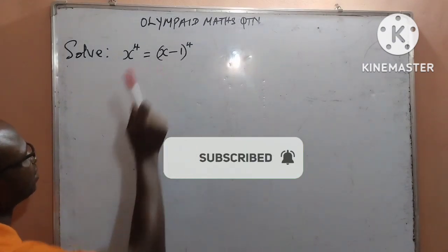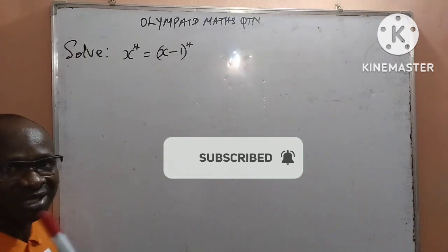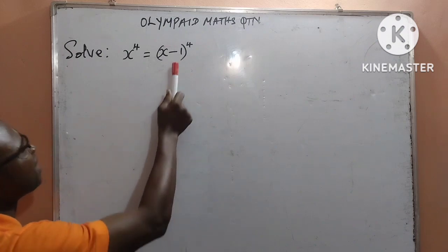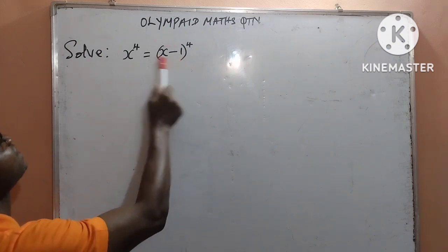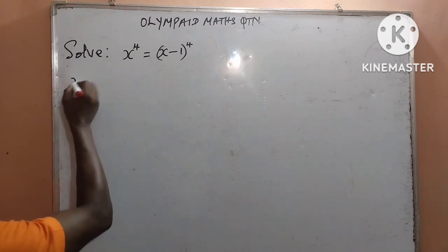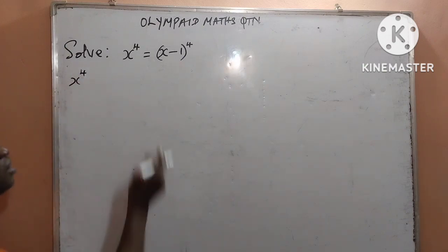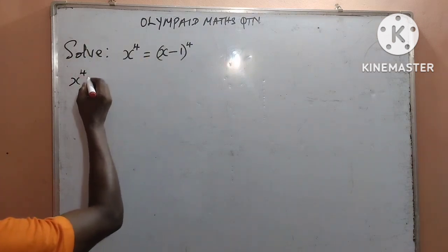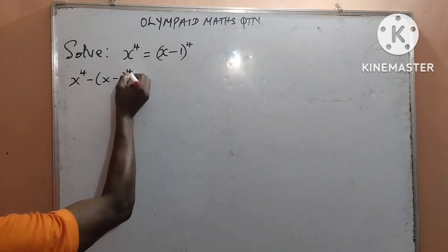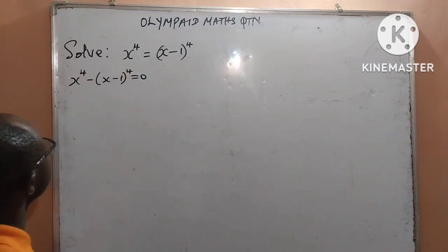Now, diving into this question that we are given, I want us to start from the right-hand side by moving it to the left-hand side. So we shall have our first expression written as x to the power of 4, minus x minus 1, all to the power of 4, equal to 0. That is our first step.